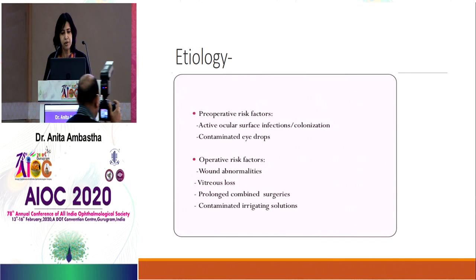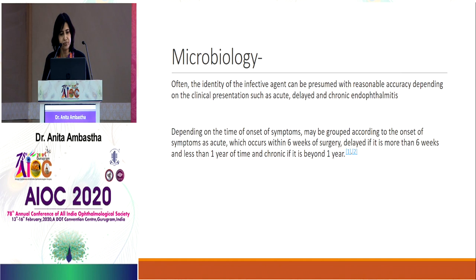Post-op endophthalmitis is most common after cataract surgery, simply because that is the most common surgery we perform. Pre-operative risk factors include untreated meibomitis, dacryocystitis, conjunctivitis, and contaminated eye drops. Operative risk factors include wound abnormalities, wound leak, vitreous loss, vitreous wick, prolonged combined surgeries, and contaminated irrigating solutions. To better manage these cases, it is important to understand the enemy first — the pathogen.